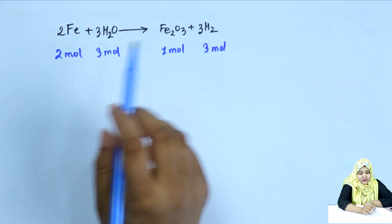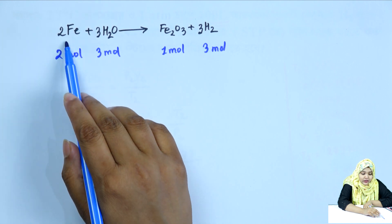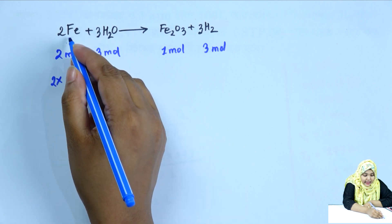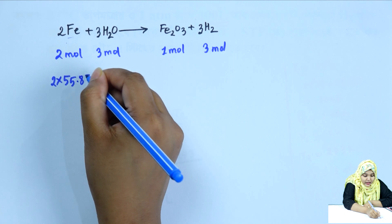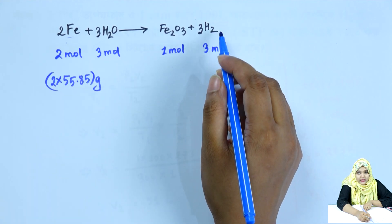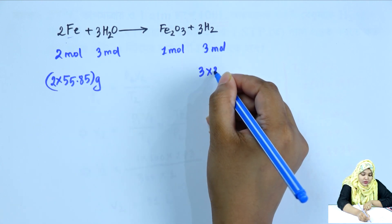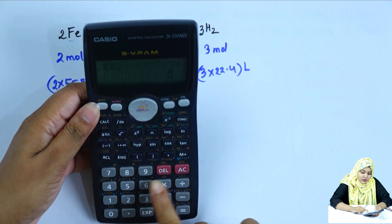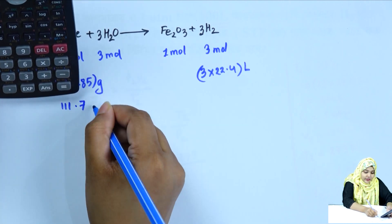So if we have 2 moles of hydrogen, we will have 2 moles of ferrous. So 2 into 55.85. We will have 2 moles of gas, which is 22.4 liters. We will have 3 moles of hydrogen gas, which is 3 into 22.4 liters. So 2 into 55.85 is equal to 111.7 grams.